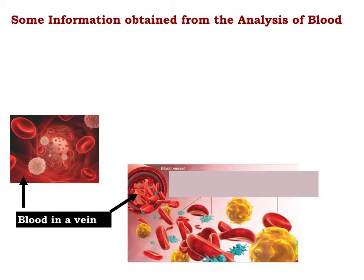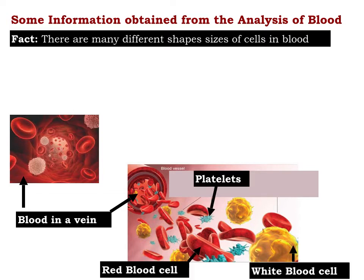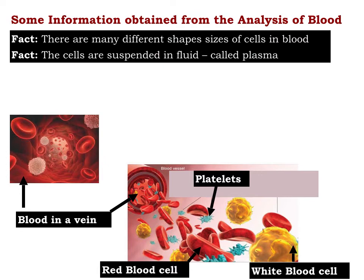What information can we obtain from analysis of blood? The picture shows you blood in the vein and you can see it's not homogeneous. We've got different cells in different shapes and sizes — red blood cells, white blood cells, platelets — suspended in a fluid called plasma.